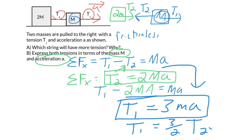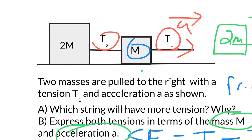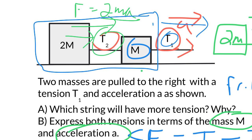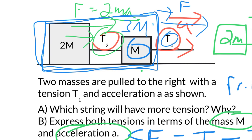Let's see if this makes sense conceptually. This string is essentially pulling just on the 2M mass. So by F equals MA, it has to pull with 2MA to get that mass accelerating. Whereas T1 has to pull both masses together. We need more force to pull two masses. In fact, if we treat them as one big mass, that combined mass is 3M, and we'd need F equals 3MA — clearly more force than pulling just a single mass.